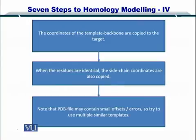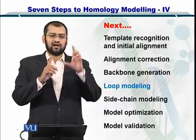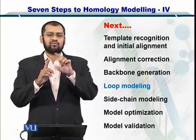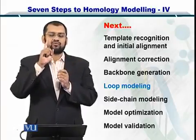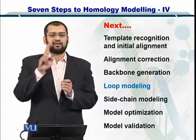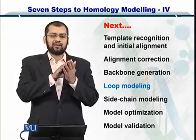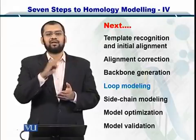Once you have done that, please remember that the PDB may contain slight offsets and errors, so it is useful to use multiple similar templates at a time. The backbone is now generated. Along with the backbone, you have also placed the side chains for those amino acids that were the same between the template and the target sequence at the same positions. So you have the backbone plus the side chains for the common amino acids.